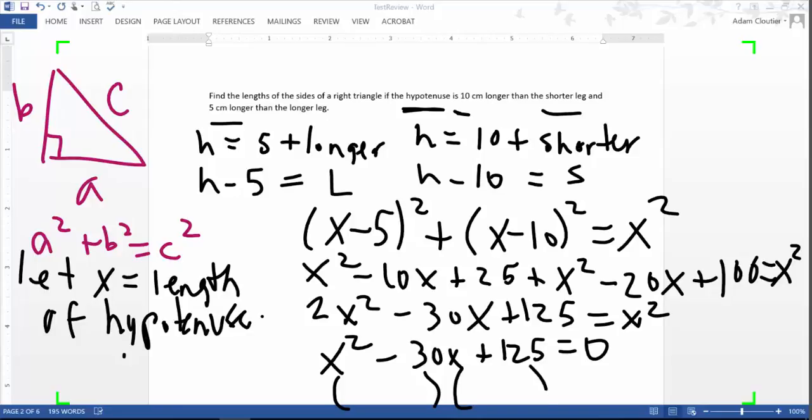And last but not least, what we have to do is we have to factor and solve. Well, maybe not last, but at least one of the last steps is factor and solve. Definitely, it's going to be X and X. X times X gives us X squared. And now what two numbers multiply together gives us 125. I'm going to guess the numbers, 25 and 5.